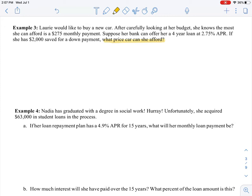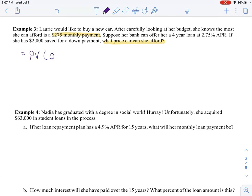This is where we are going to use the PV function because it's not asking us what monthly payment can she afford. We already know that piece. So that's why it's going to be PV. Our rate is 0.0275 monthly, we're going to get this loan for four years, and $275 is our payment.